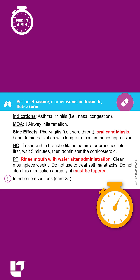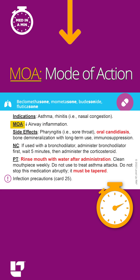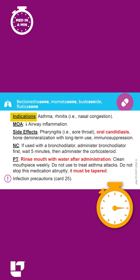Medications in this class include beclomethasone and mometasone, among others. These medications are used to decrease airway inflammation in patients with asthma or nasal congestion. A key side effect of this drug class is the risk for oral candidiasis, which is a fungal infection in the mouth.